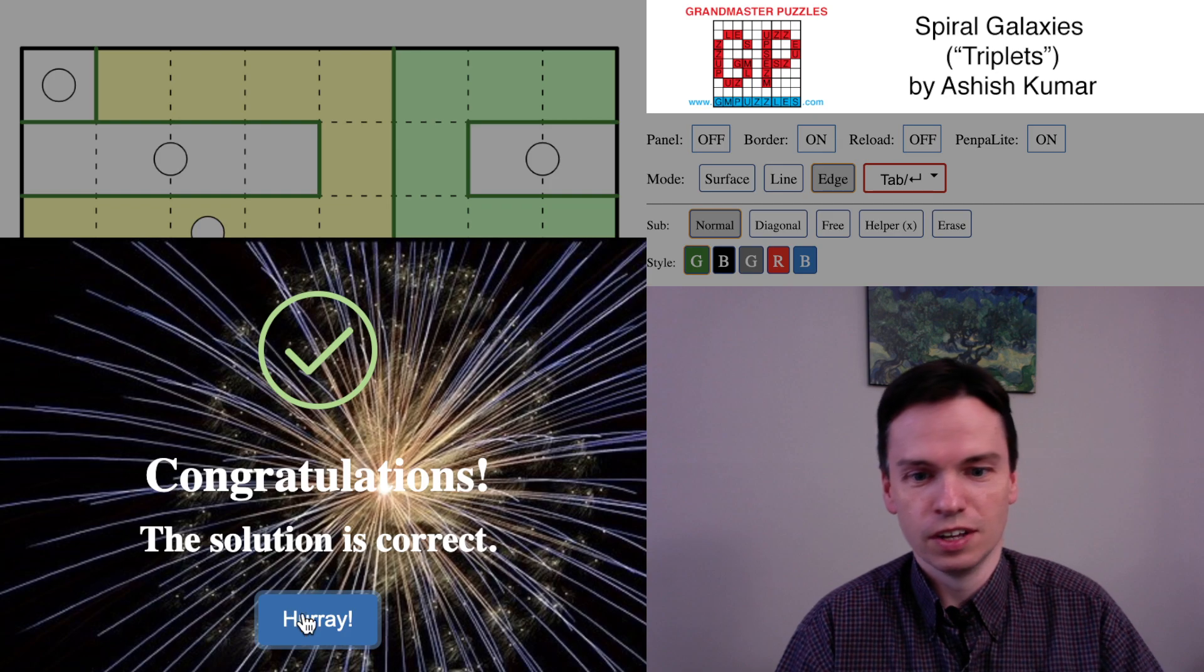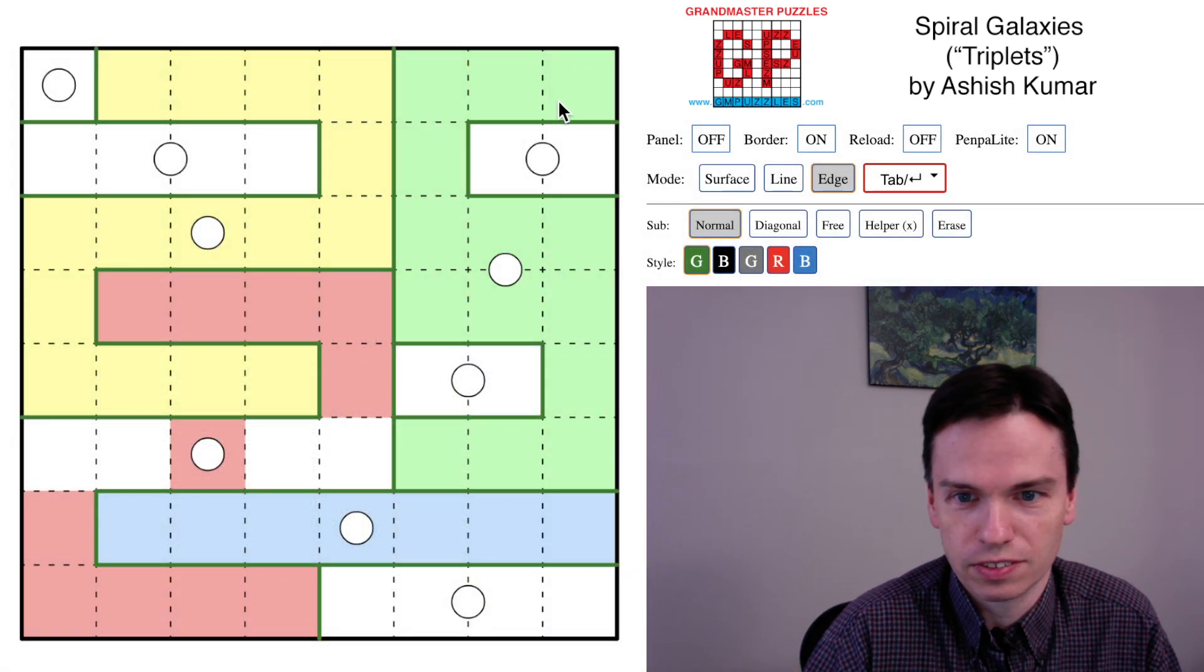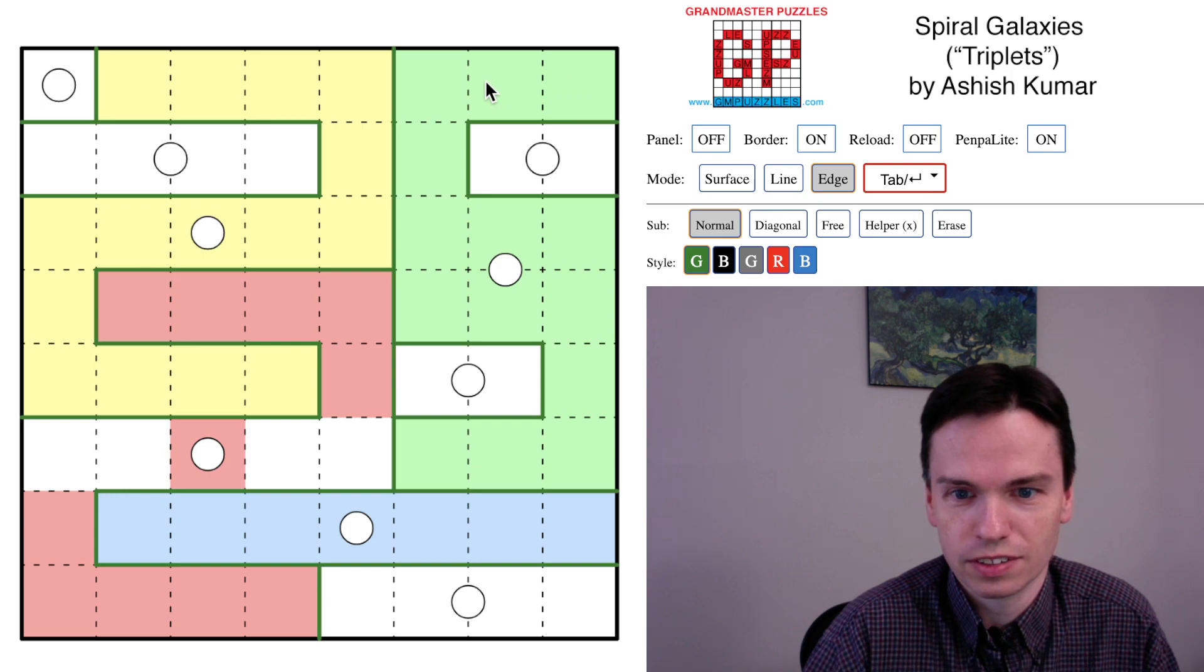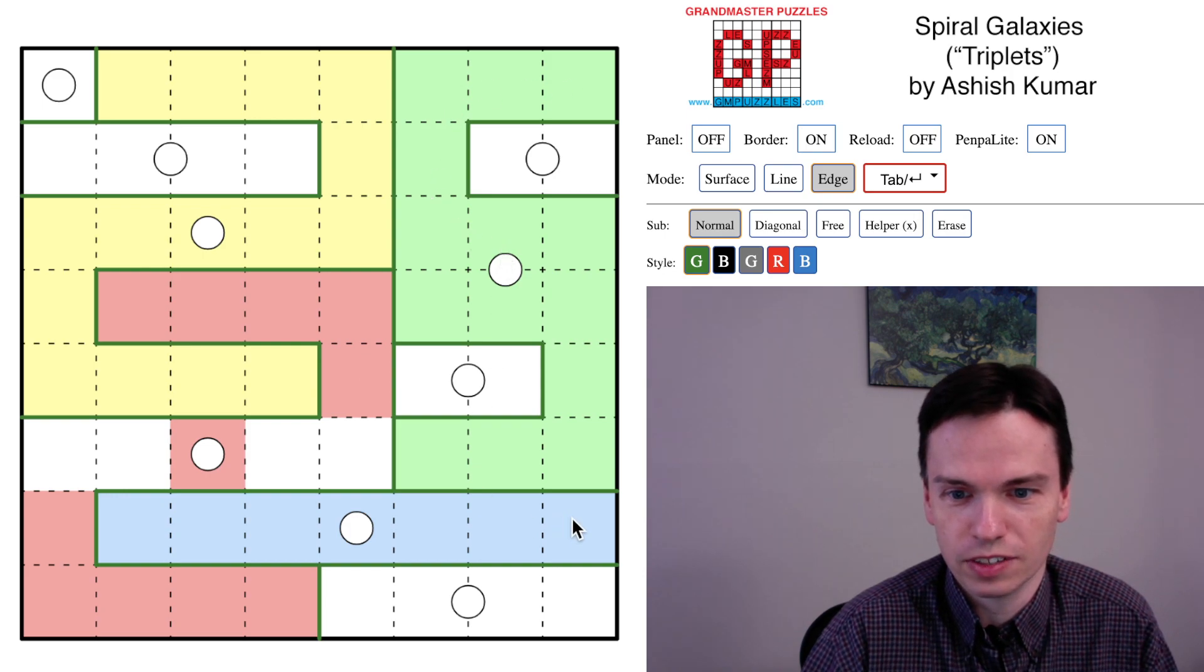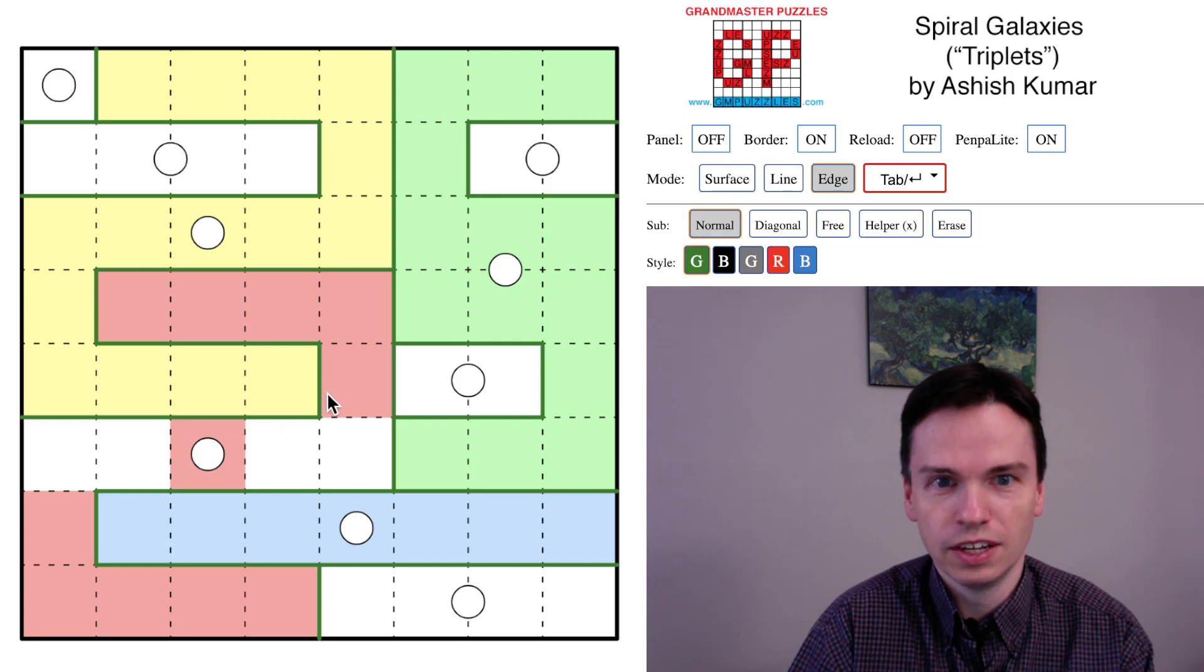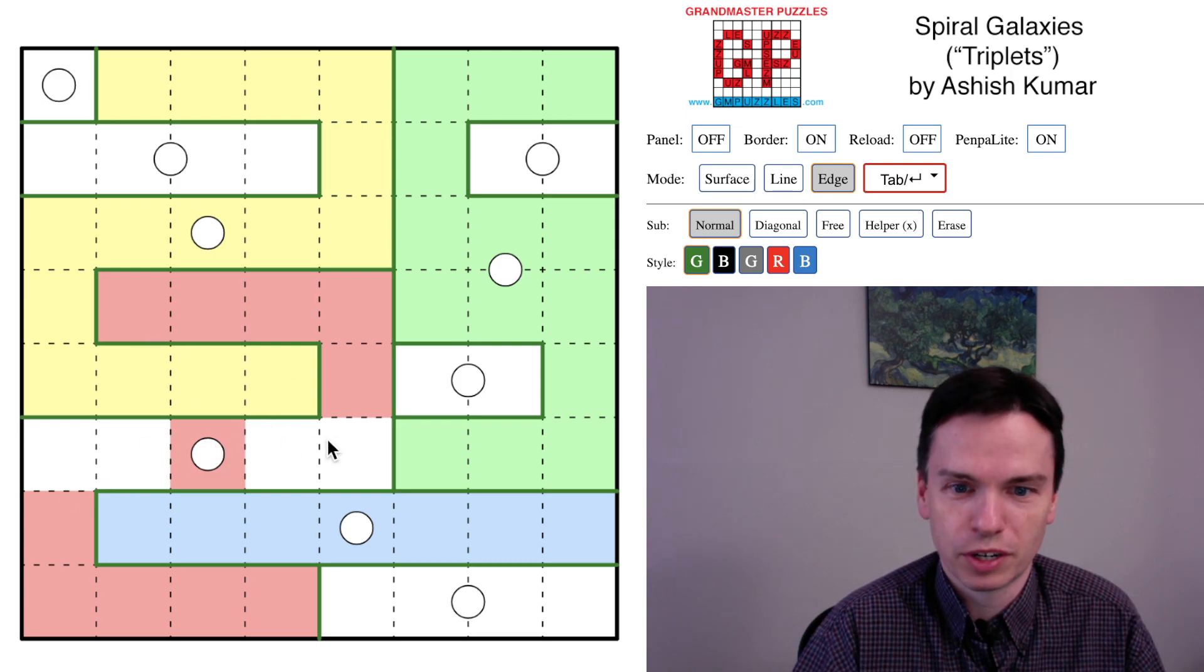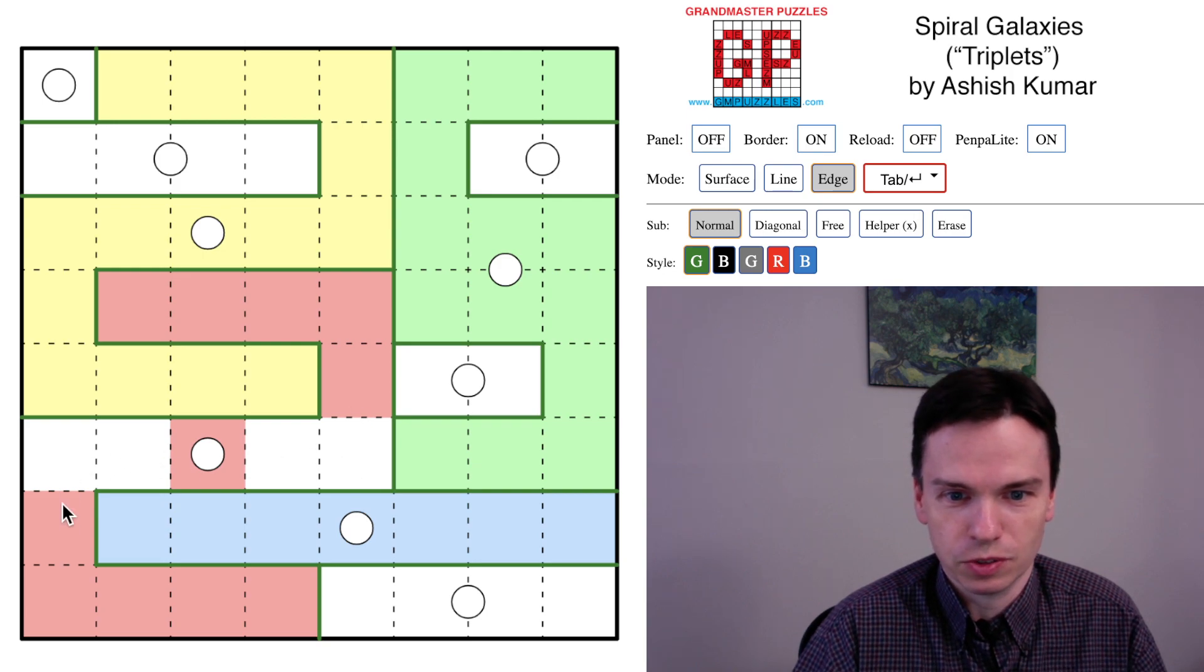So hopefully you got something from this video in general - sort of how to look at cells, particularly this cell at the start that could only join to one group. Found another cell that could only join to one group, and then another cell here that can only join to one group to start working through that. And so going through the tab menu in PenPy Edit, you can use the coloring tool to help out with some of these spiral galaxy puzzles. So hope you got something from this video and enjoy the rest of the puzzles this week. We'll see you again soon.